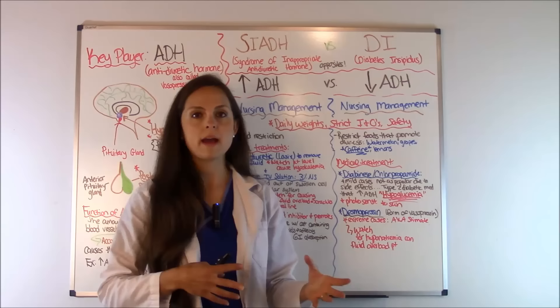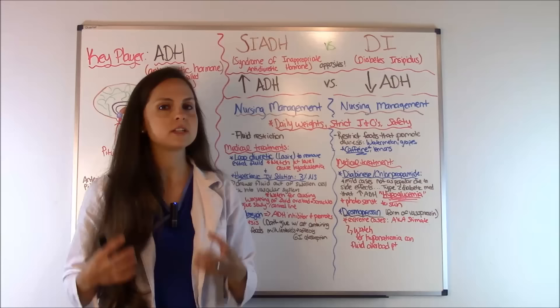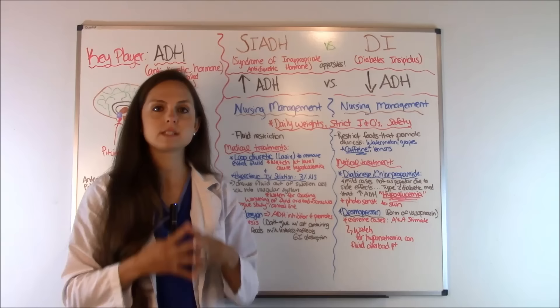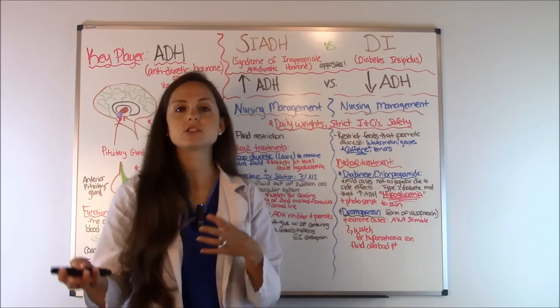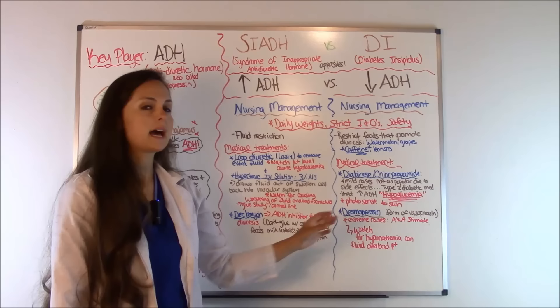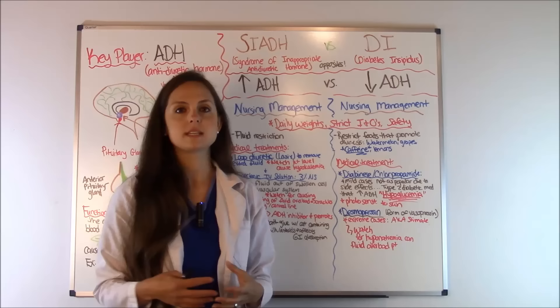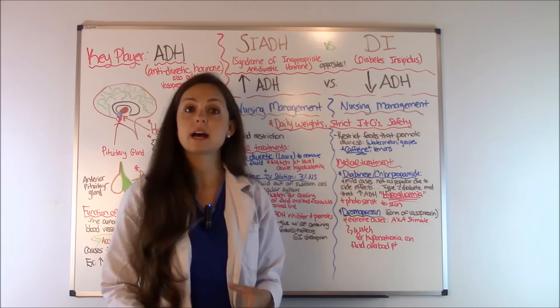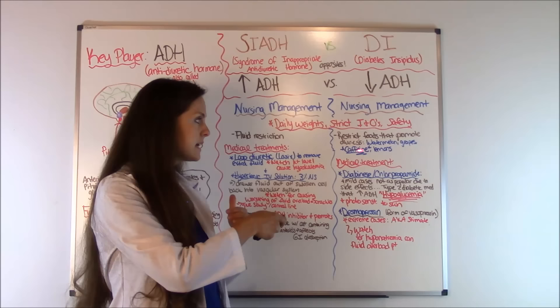For SIADH, since patients have way too much fluid because of excess anti-diuretic hormone causing fluid retention, the doctor will order a fluid restriction and you will implement it. For diabetes insipidus, make sure patients are not consuming foods that promote natural diuresis — like watermelons, lemons, and grapes — and especially avoid caffeine from teas, coffees, and energy drinks, which strongly promote diuresis. You don't want DI patients taking those in.